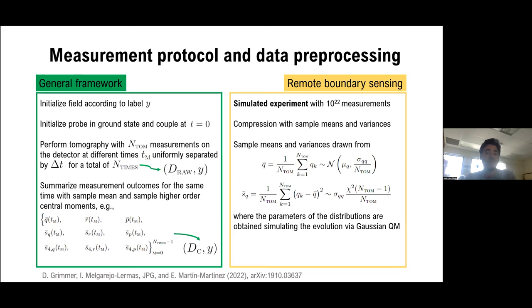So the first ingredient of this framework is the measurement protocol and the data preprocessing. So generally what we do is that at each one of our experiments, we initialize the field according to the label that we are measuring at that time. We also initialize the probe in the ground state and couple it to the field at time t_0. We perform tomographies, which are going to depend on the field and on the detector model that we are using at different times. And that way we get a matrix of raw data that are associated to the label Y of the sample that we are measuring at that time. Now if we realize that all the measurements that we are doing for the same time are independent, then we can actually compress those data using only the sample means and maybe sample higher central moments. For example, using only the sample means, sample variances, and sample fourth moments. And that way we get a pair formed by a matrix of compressed data and the label Y of the sample that we are associated with.